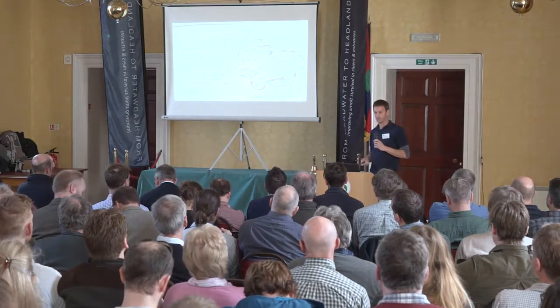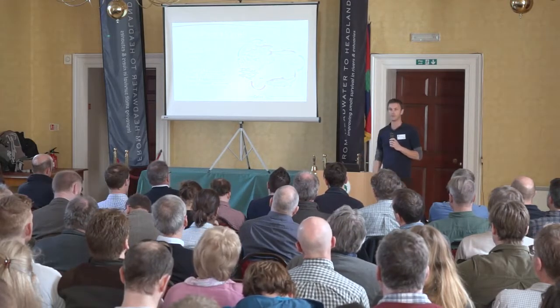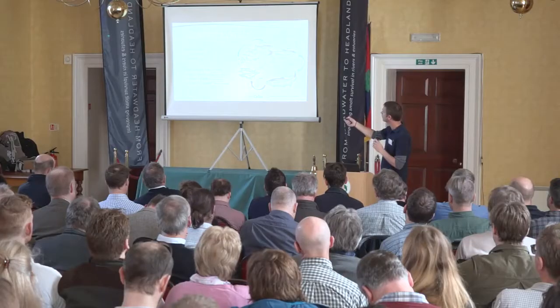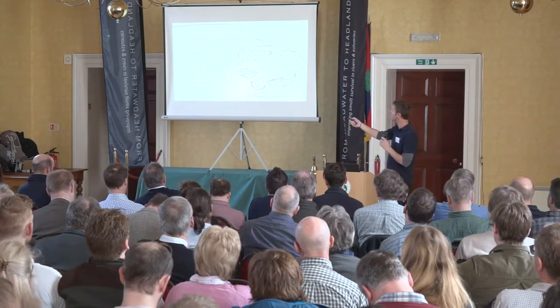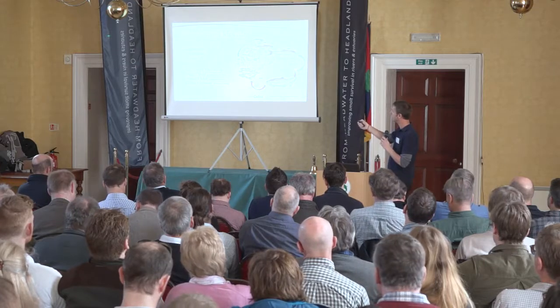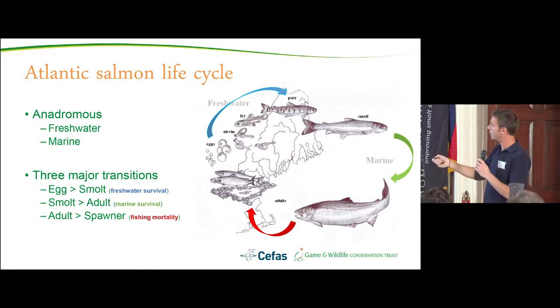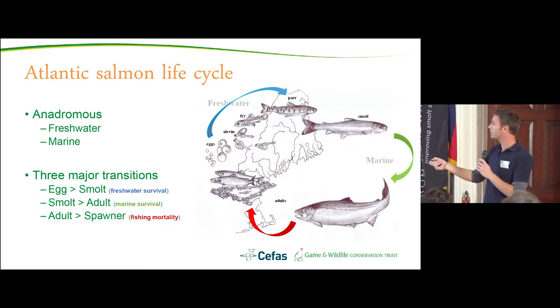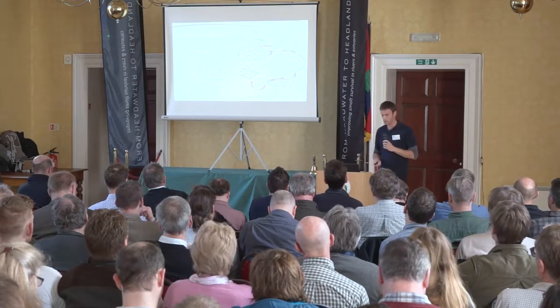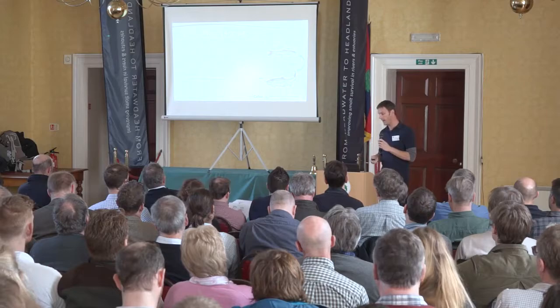In this life cycle I break it down into three major transitions: an egg-to-smolt phase — the freshwater phase — then a marine phase where the smolt goes out to sea, spends time in the marine environment, matures and grows, and feeds before coming back as an adult to re-enter the river to spawn. This is associated with three major types of survival or mortality: freshwater survival, marine survival, and fishing mortality. In this talk I'm going to focus entirely on the marine phase and its link to the freshwater ecosystem.